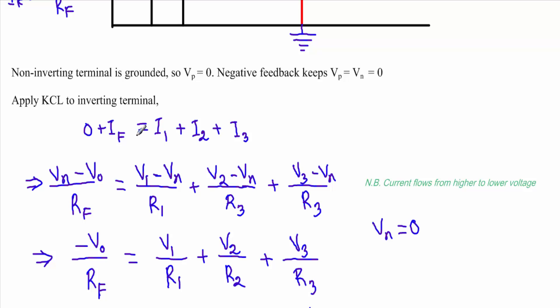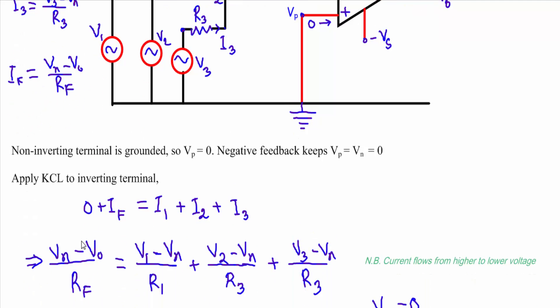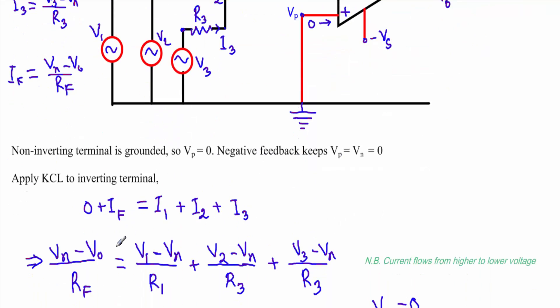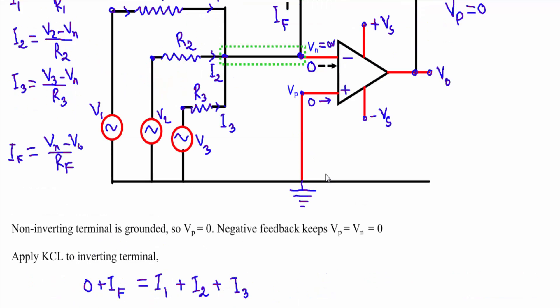Now putting in the values: IF equals Vn minus V0 divided by Rf. Substituting I1, I2, and I3, we get: (Vn minus V0) divided by Rf equals (V1 minus Vn) divided by R1 plus (V2 minus Vn) divided by R2 plus (V3 minus Vn) divided by R3. Since the non-inverting terminal is grounded, Vn equals zero.